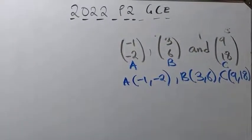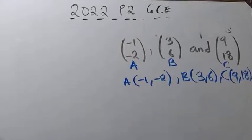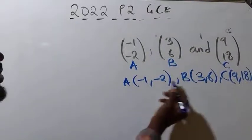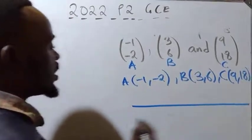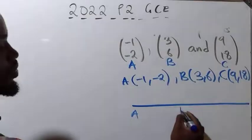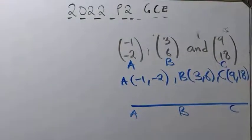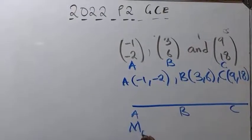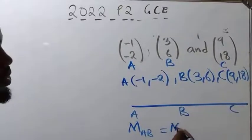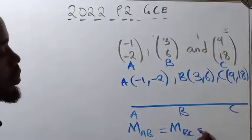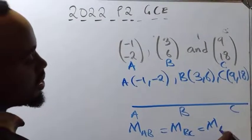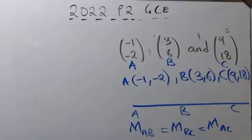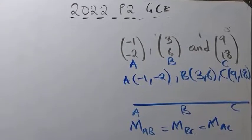In this case I want to use a method in terms of gradient. We are going to state that these points are collinear in terms of their gradient. Since A, B, and C lie on the same straight line, and the gradient of a straight line is constant, the gradient of AB will equal the gradient of BC, which will also equal the gradient of AC. So M represents gradient — gradient of AB, BC — and we will use this method.